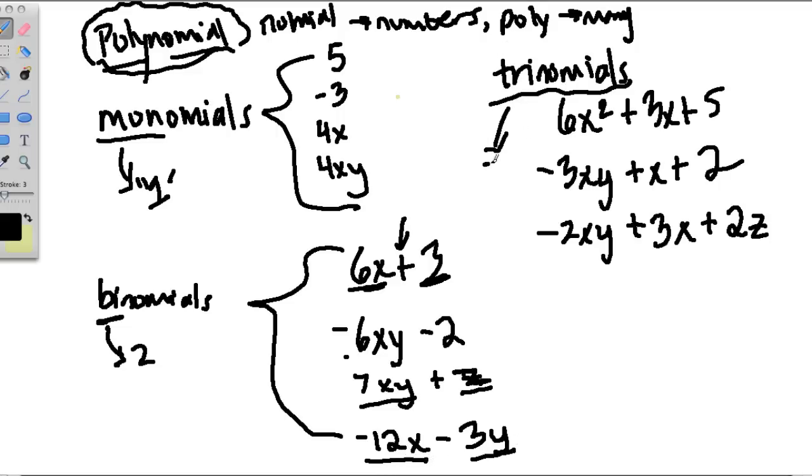Trinomials, tri means three, so each of these terms, notice now we have two addition signs, could be subtraction as well, because they're separating one, two, three terms. This trinomial has one, two, three terms, and this one also has one, two, three terms.